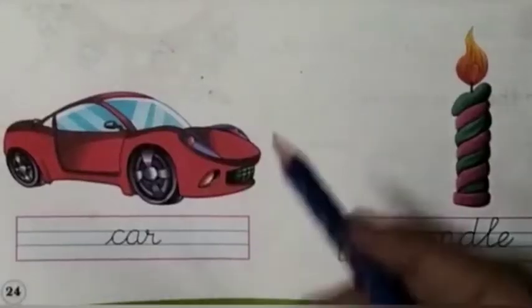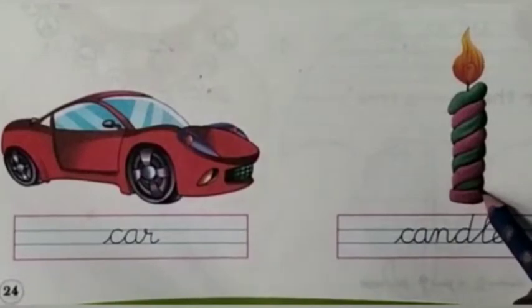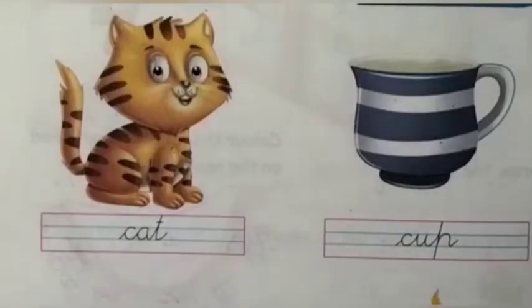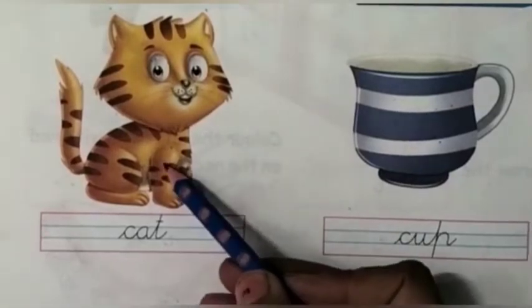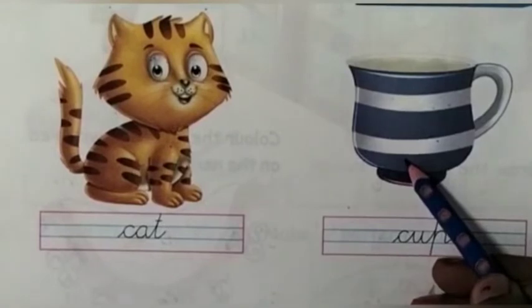Repeat again. C ka car, C ka candle, C ka cat, C ka cup.